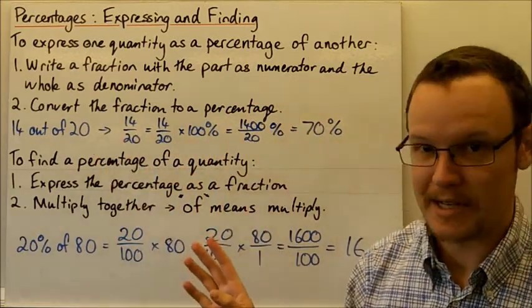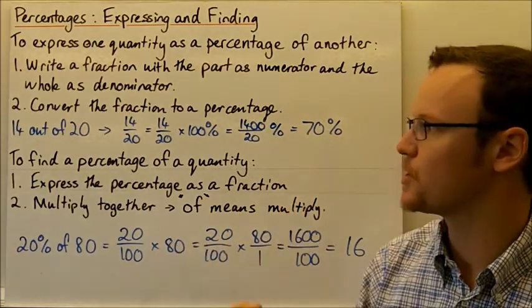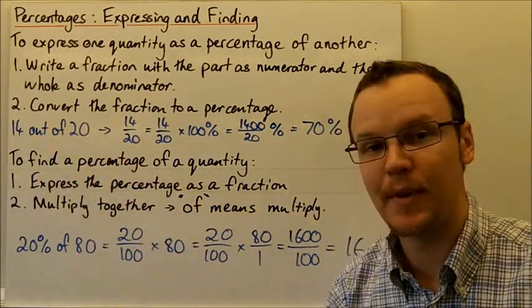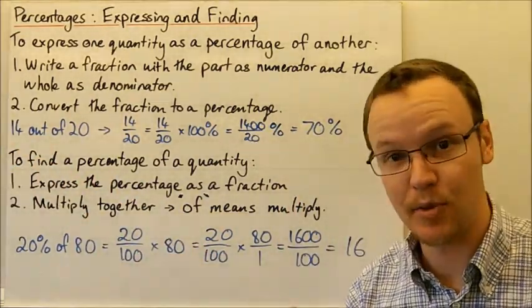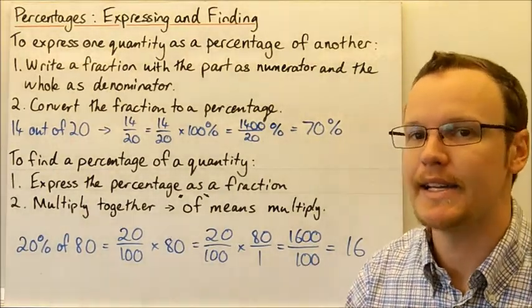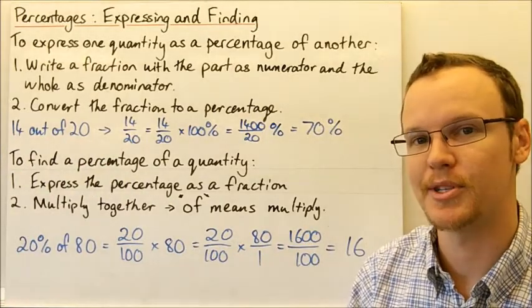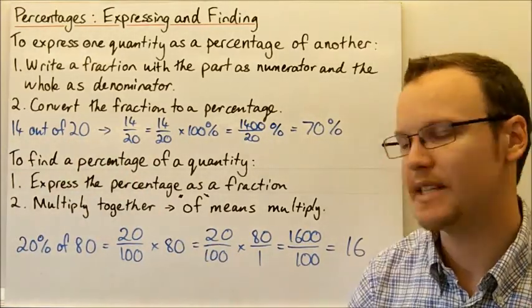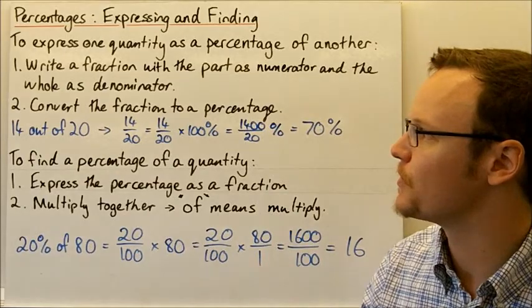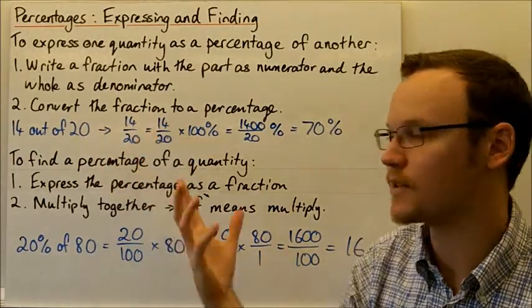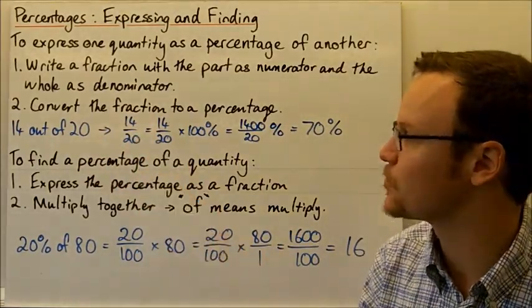Then we need to convert the fraction to a percentage. It's a very simple two-step process. So if a person gets 14 marks out of 20 marks on a test, the 14 is the part, the part that the person achieved, and 20 is the whole, the potential number of marks that we could have got. So that as a fraction is 14 out of 20, 14 parts out of the 20.